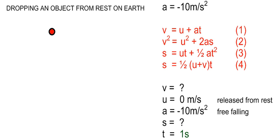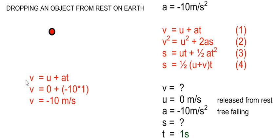Let us take the example where t equals 1 second — the ball was released from rest, and after 1 second we need to find the displacement and velocity. To find the velocity after 1 second, we use equation 1. Substituting: initial velocity equals 0, acceleration equals minus 10, and time equals 1 second, giving us a velocity of minus 10 meters per second. The minus refers to the fact that it is moving downwards, and the 10 refers to the size of the velocity vector — 10 meters per second downwards.